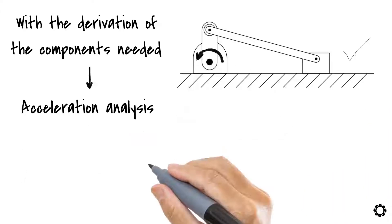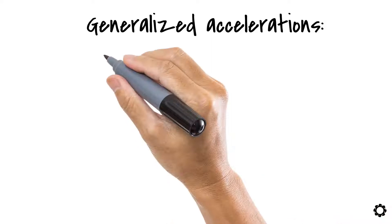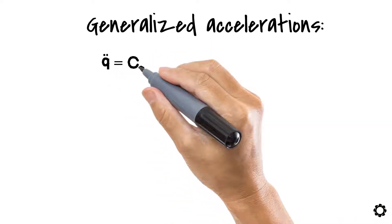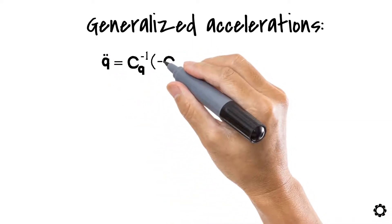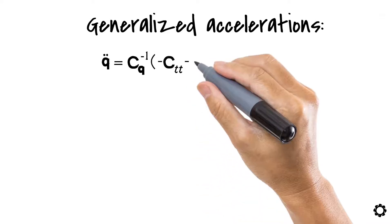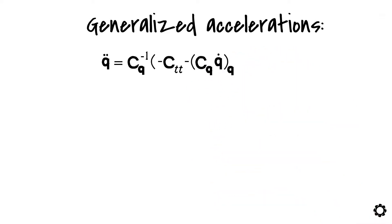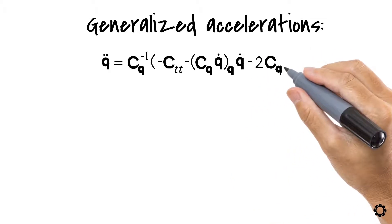Let's bring back the generalized accelerations equation. q double dot equals cq inverse times minus ctt minus cq times q dot q times q dot minus 2 times cqt times q dot.